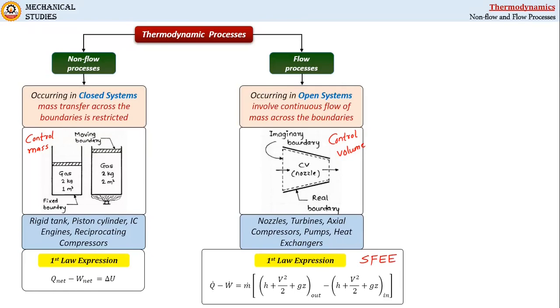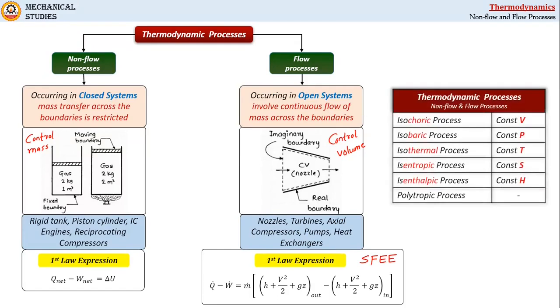Now if we consider thermodynamic behavior of working substance, then thermodynamic processes, both non-flow as well as flow processes can be of these types. First one is isochoric process that is constant volume process. Second isobaric process that is constant pressure process. Third one is isothermal process where temperature is constant. Isentropic process where entropy is constant. Then isenthalpic process that is constant enthalpy process. And the last one is polytropic process, which is a general process.